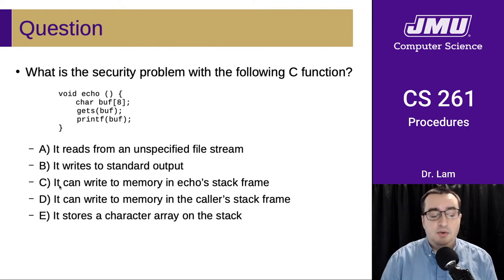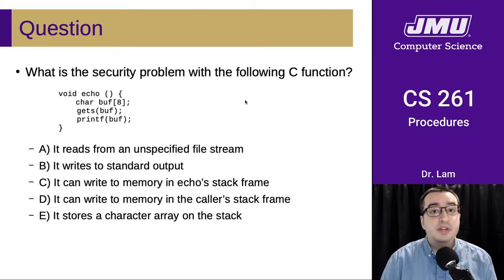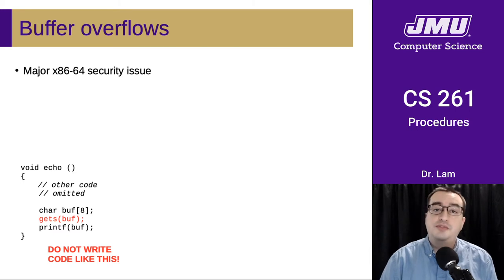So let's think about C and D. Option C says it can write to memory in Echo's stack frame - Echo is the name of this function. What this option points out is that gets will write to the character buffer in Echo's stack frame. That's fine, that's intended - we are meant to write data into the buffer. What is not intended is writing to memory in the caller's stack frame. Echo should not be able to modify its caller's stack frame. But due to a combination of features in x86, it is actually possible for this to happen. So D is the problem here.